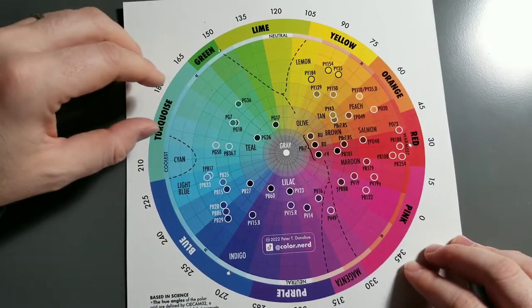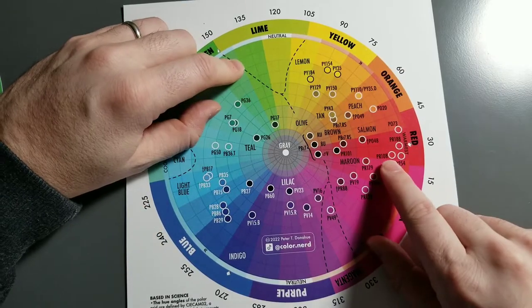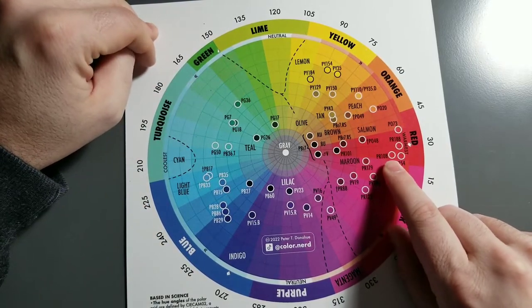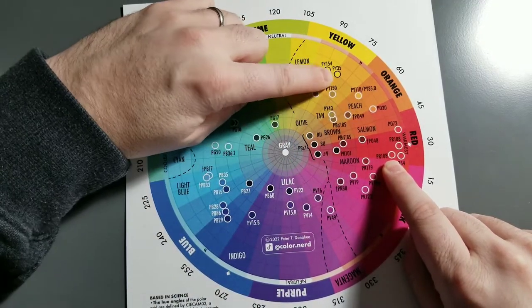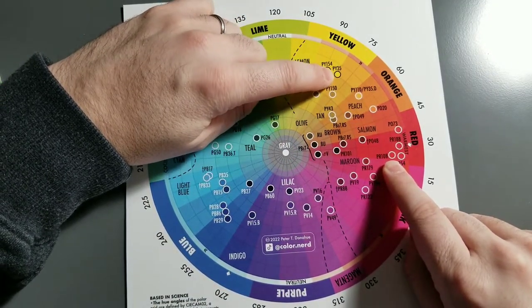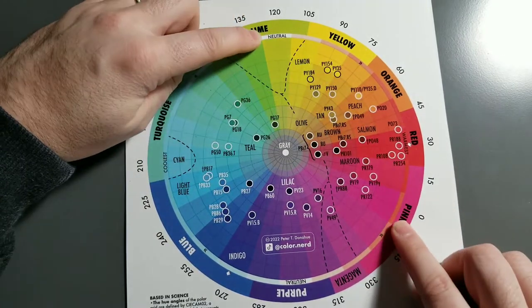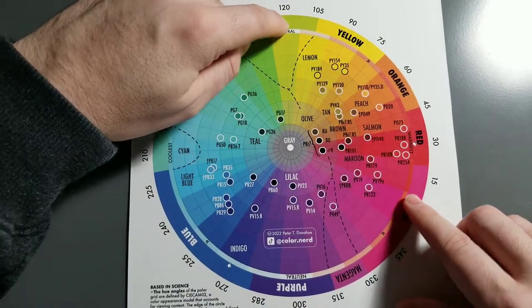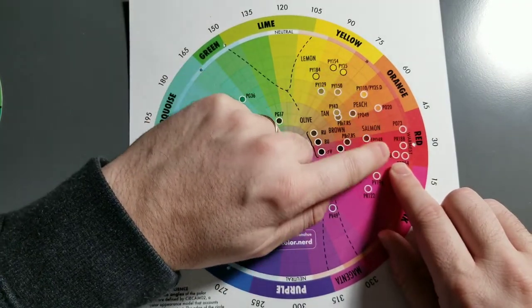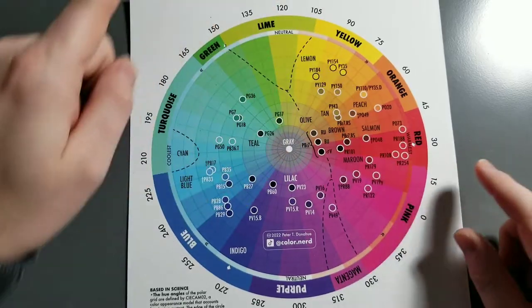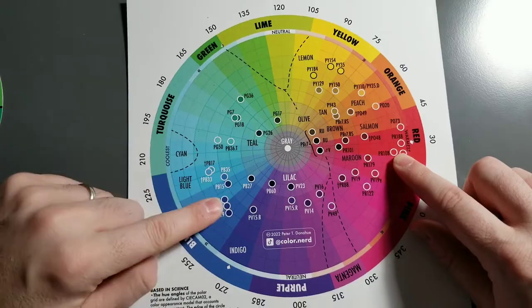Rather than just thinking of red, yellow, and blue as equally spaced, this is showing us that the pigment PR108, cadmium red, and the pigment PY35, cadmium yellow, are actually closer together than you would think. They're not 120 degrees apart on this thing. They're kind of closer together. There's a shorter road to travel, therefore, if you're mixing those and trying to get an orange, than if you're trying to mix PR108 with, say, cobalt blue, which is way over here, further than the traditional color wheel would have you believe.